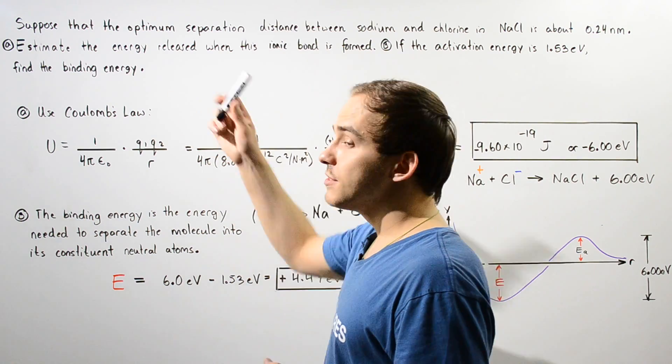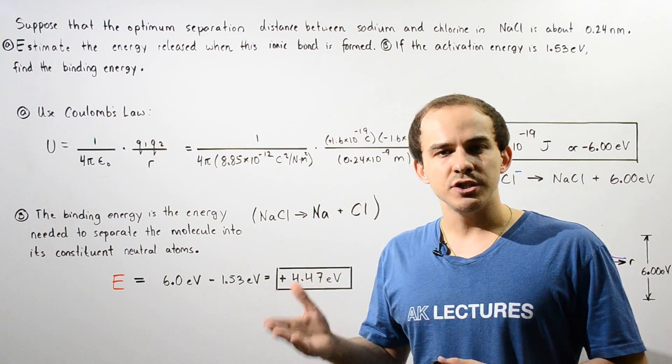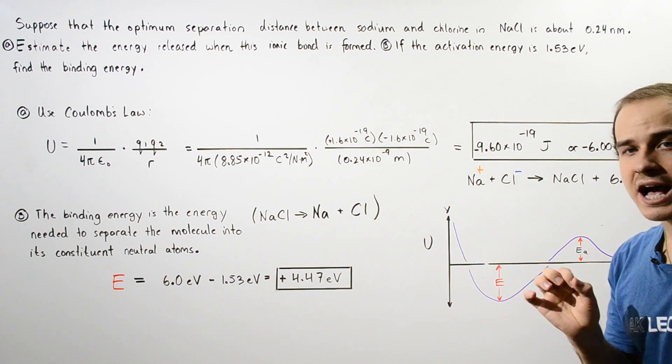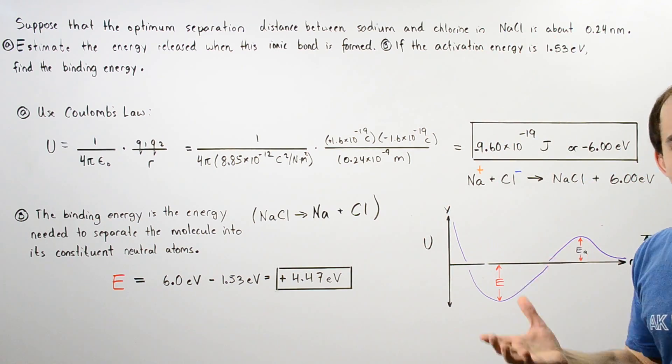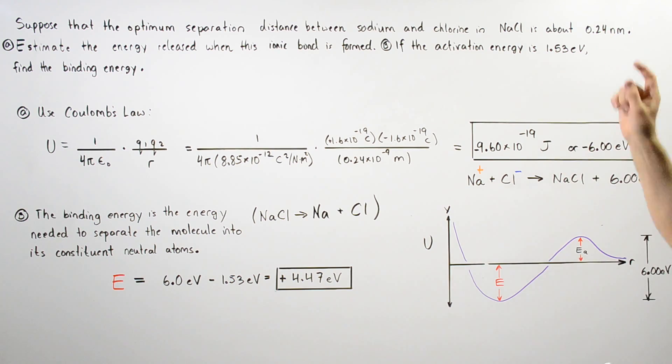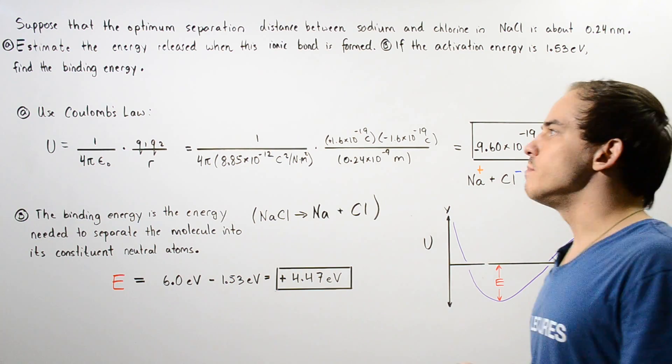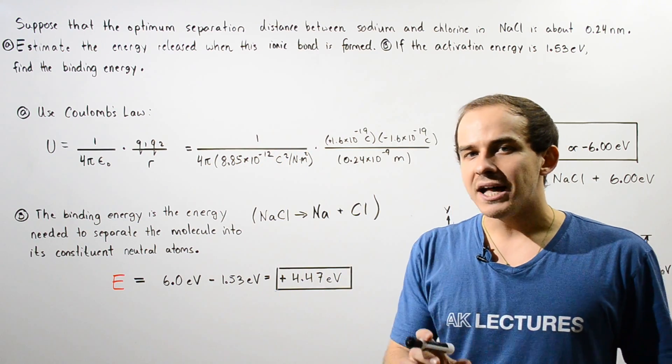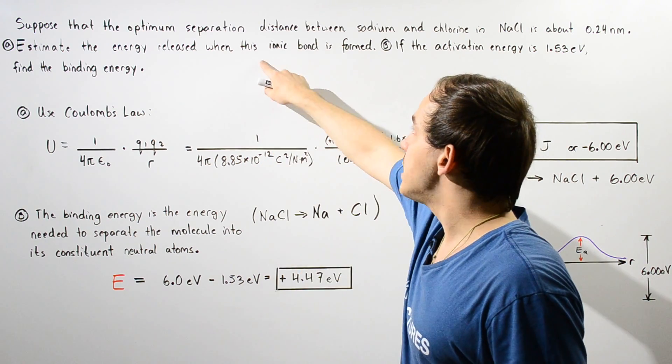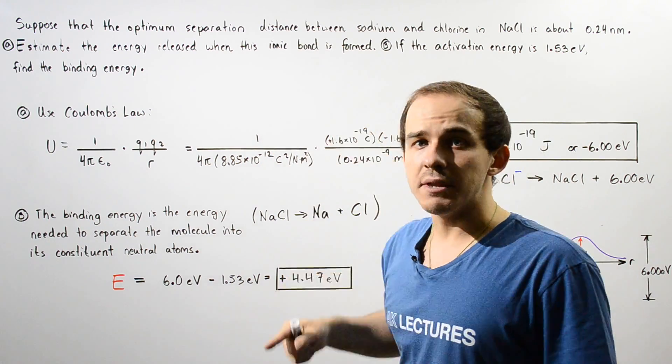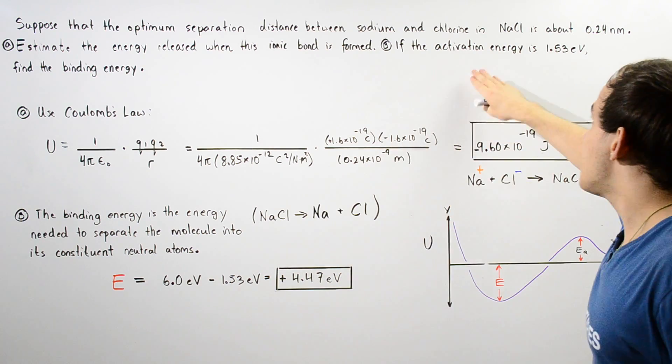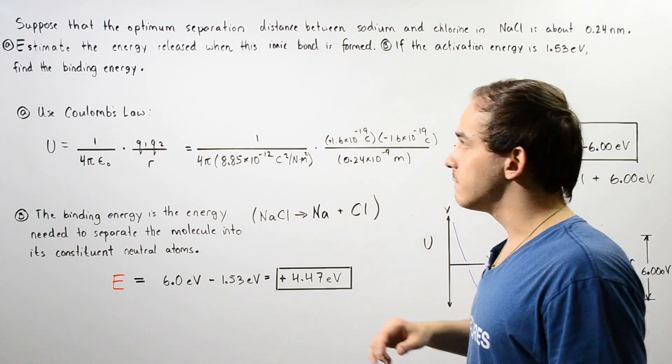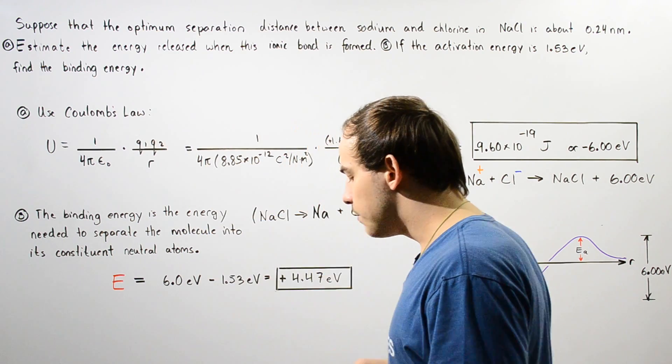Suppose that the optimum separation distance between the sodium atom and the chlorine atom inside the sodium chloride molecule is given to be 0.24 nanometers. In part A, we want to estimate the amount of energy released when the ionic bond is formed. In part B, if the activation energy is 1.53 electron volts, we want to calculate the binding energy.